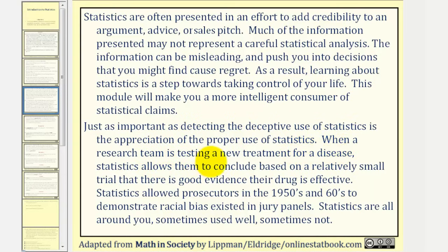When a research team is testing a new treatment for a disease, statistics allow them to conclude, based on a relatively small trial, that there is good evidence their drug is effective. Statistics allowed prosecutors in the 50s and 60s to demonstrate racial bias existed in jury panels. Statistics are all around you, sometimes used well, sometimes not.